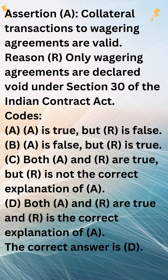Assertion A: Collateral transactions to wagering agreements are valid. Reason R: Only wagering agreements are declared void under Section 30 of the Indian Contract Act.